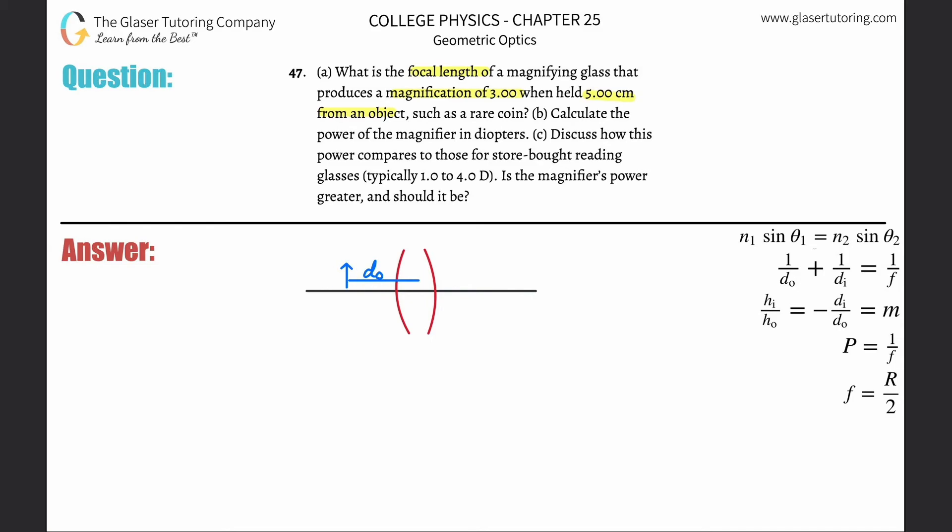Here I have a certain object. The object distance they told us was five centimeters. You can leave it in centimeters or convert it into meters, it probably doesn't matter, just be careful with what you're calculating. They also tell us the magnification is three, so knowing the object distance and magnification, looking at the formula, I can calculate the image distance first.